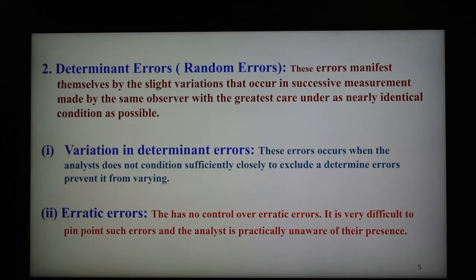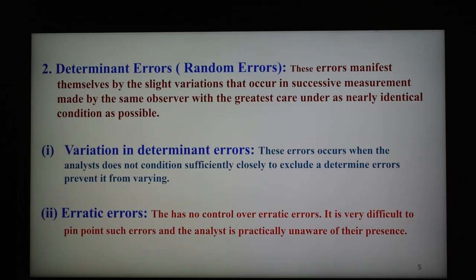The second type is erratic error. The analyst has no control over erratic error — it is very difficult to pinpoint such type of error, and the analyst is practically unaware of their presence. For example, weighing with a sensitive balance subjected to vibration shows erratic error. Proper mounting of the balance can however minimize this type of error. This is called erratic error; it is a serious error and difficult to control.